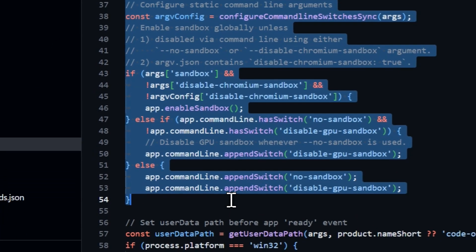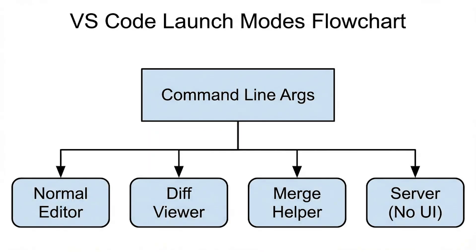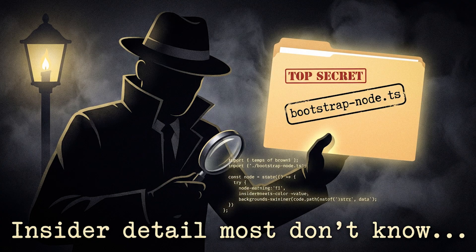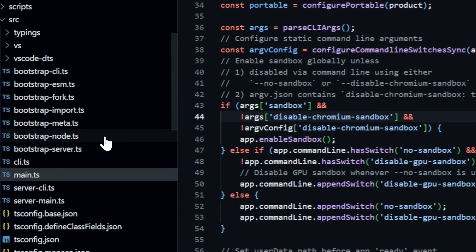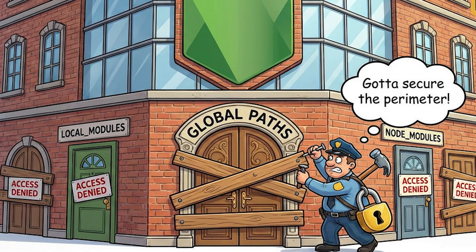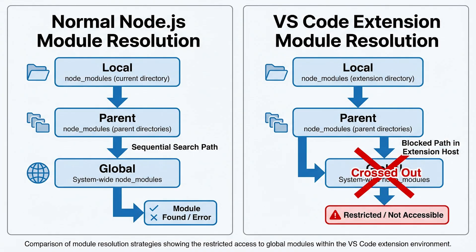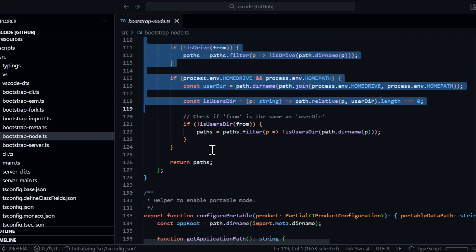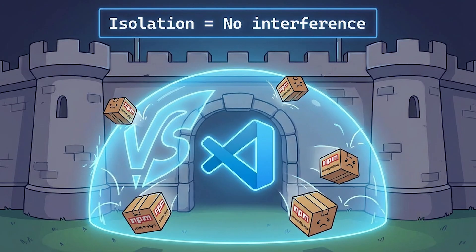main.ts is the conductor of the whole orchestra, and the first thing it does is parse your command line arguments. VS Code can launch in multiple modes: normal editor mode, a diff viewer, a merge conflict helper, even as a server with no UI at all. The command line arguments determine which path it takes. But here's an insider detail most people don't know: before any of your code runs, before any window appears, VS Code runs a script called bootstrap-node.ts. This script does something sneaky — it modifies Node.js's module resolution. Normally when Node.js imports a module, it looks in a bunch of default places including global installations on your system. But VS Code's bootstrap script removes those global paths — for isolation. VS Code doesn't want some random globally installed NPM package interfering with its internals, so every dependency is guaranteed to come from VS Code's own bundled modules.